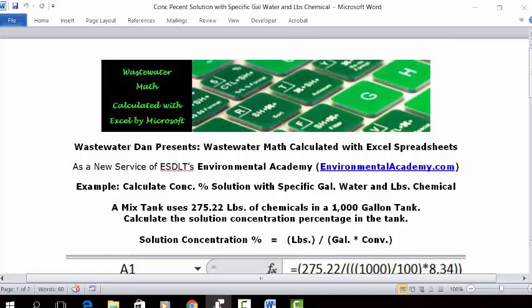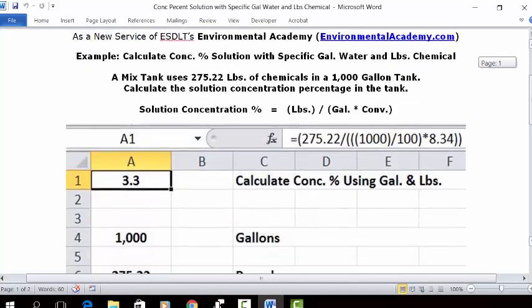The formula is going to be concentration equals pounds divided by the gallons times the conversion factor. That's the formula. Let's see how we put that in an Excel spreadsheet.